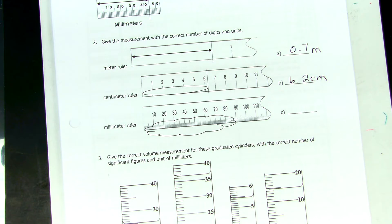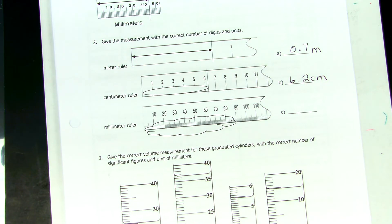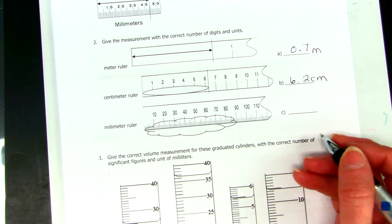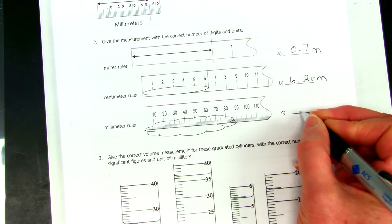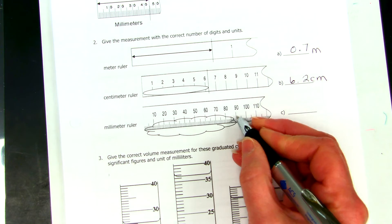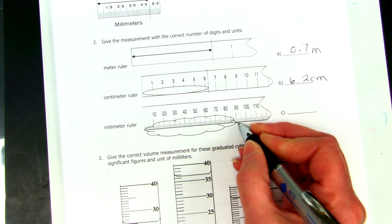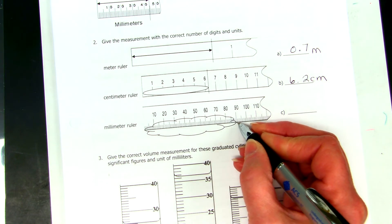There's only a few times in chemistry that we don't have units in our numbers. And, how about the millimeter ruler, Alex? Okay, is it 90? Because, here's a marking of 90, and then the next one is a tenth.